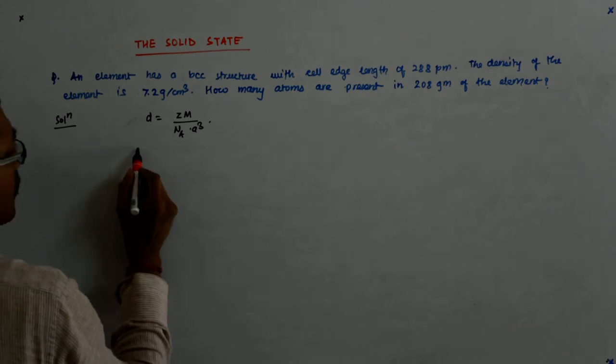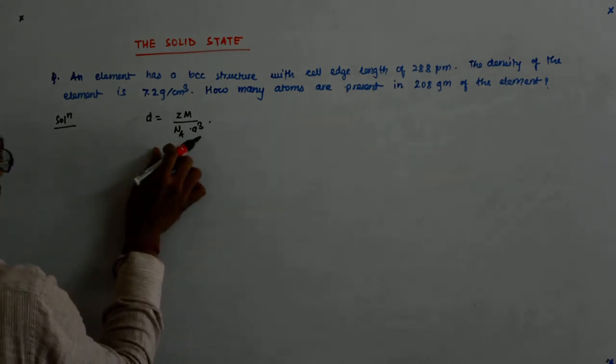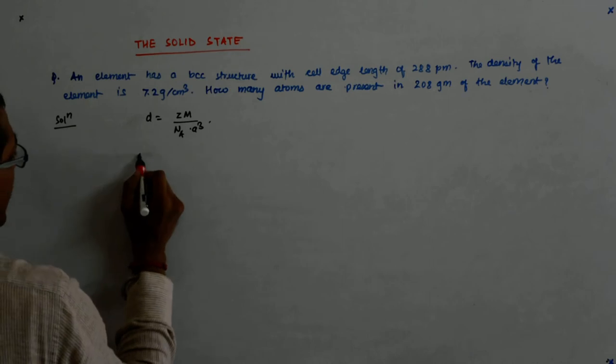Right? Now my density is given as 7.2, so actually I would like to find out what my m is. So my m is equal to NA a cube into d upon z.